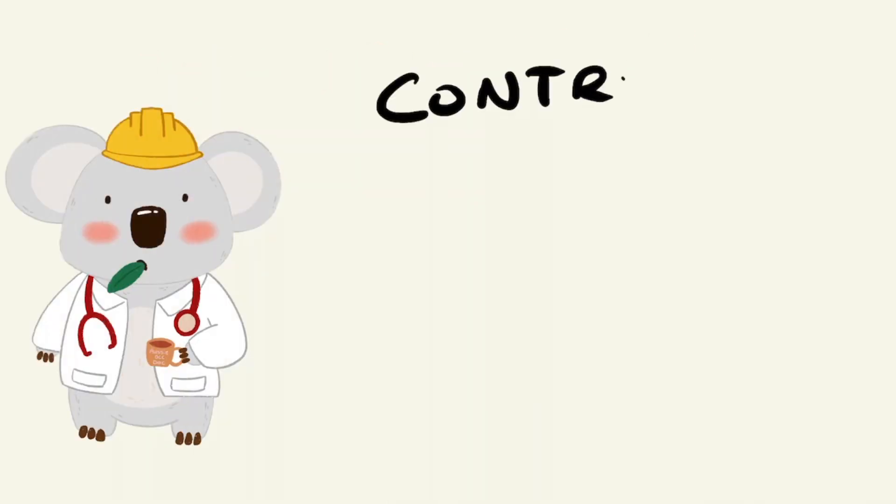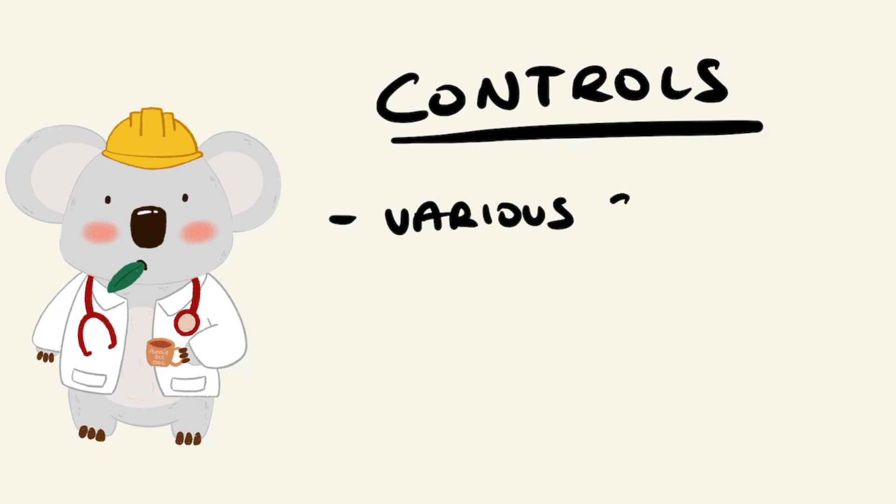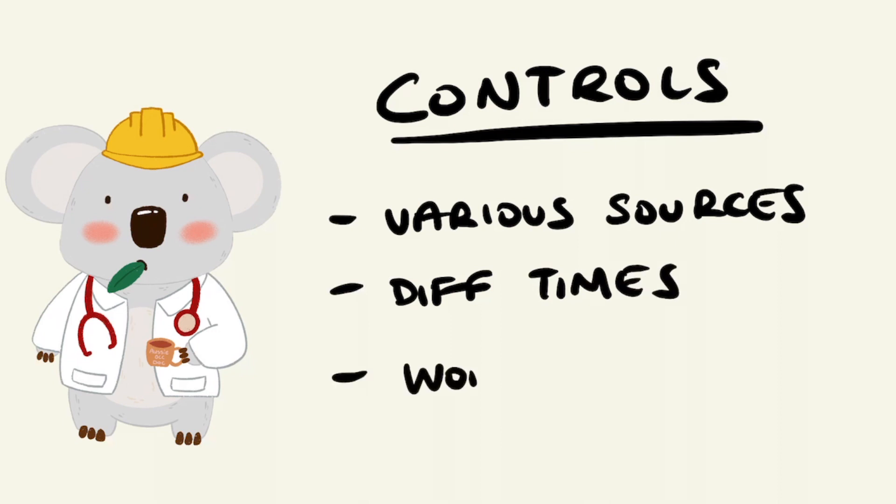In terms of implementing controls to manage occupational noise exposure, it can be difficult as not only can they come from various sources, occur at different times, but can be affected by worker movements throughout a shift, leading to varying levels of exposure over a shift period.